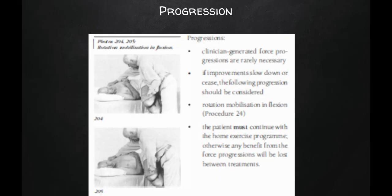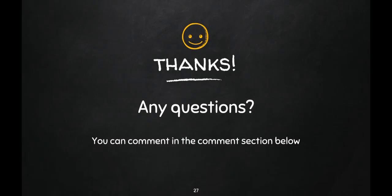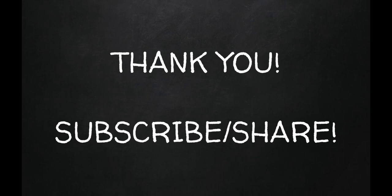Therapist overpressure can also be given — with the patient in supine lying, one hand is placed over the shoulder and the other over the knee, and the therapist applies overpressure. The reference for today's video is the book McKenzie Volume 1: Mechanical Diagnosis and Treatment of the Lumbar Spine. If you have any questions, please comment below. If you enjoyed this video, please subscribe to the channel and share it with your friends. Thank you.